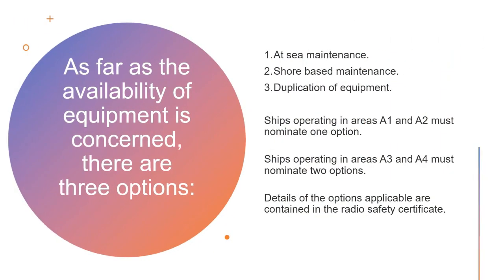As far as the availability of equipment is concerned, there are three options. Ships operating in areas A1 and A2 must nominate one option. Ships operating in areas A3 and A4 must nominate two options. The details of the applicable options are contained in the radio service certificate.